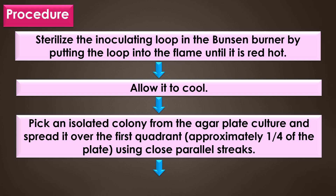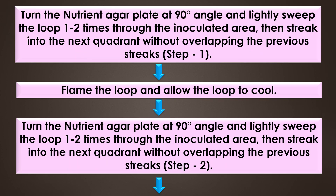First, sterilize the inoculation loop in the Bunsen burner by putting the loop into the flame until it is red hot, and then allow it to cool. After that, pick an isolated colony from the agar plate culture and spread it over the first quadrant, approximately one-fourth of the plate using close parallel streaks. Then turn the nutrient agar plate at 90 degrees and lightly sweep the loop one to two times through the inoculated area, streaking into the next quadrant without overlapping the previous streak. This is step one.